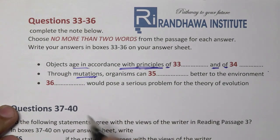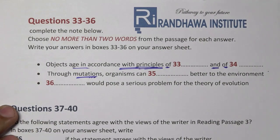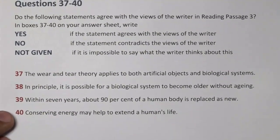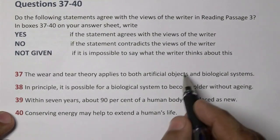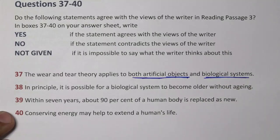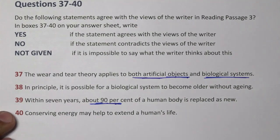Question 37: the wear and tear theory applies to both artificial objects and biological systems. Question 39 — I try to keep the old figure in mind: 100 minus 90 equals 10. If you can give 10, you will not say something wrong.